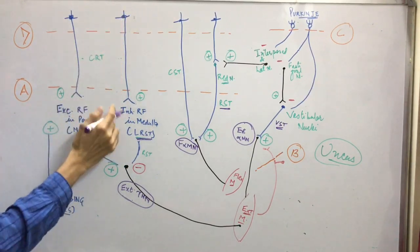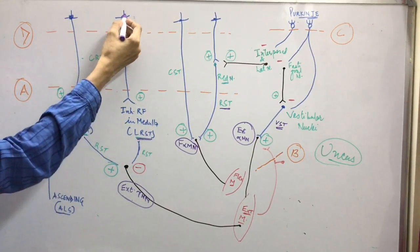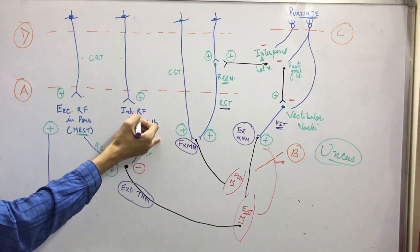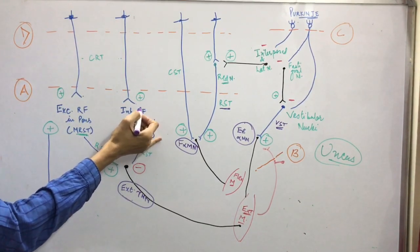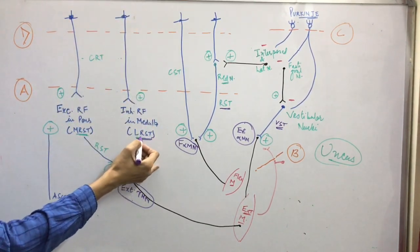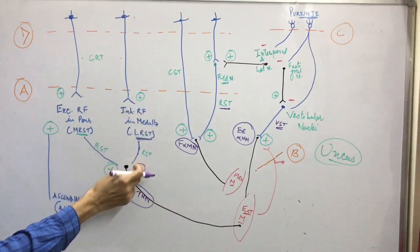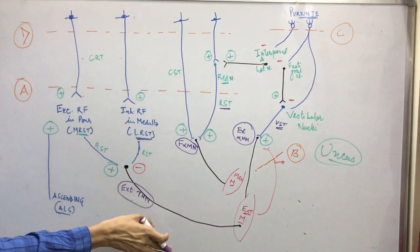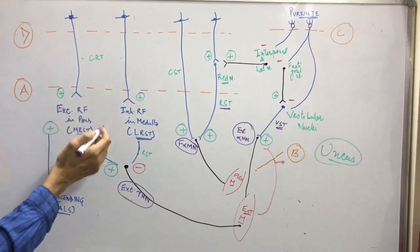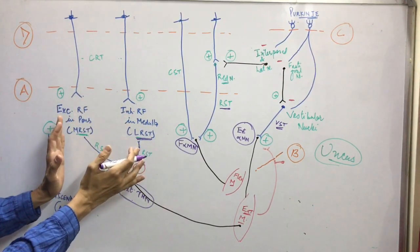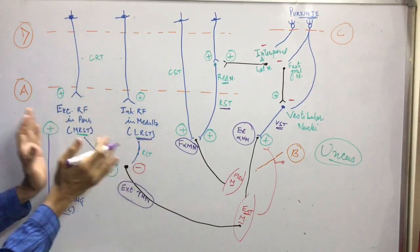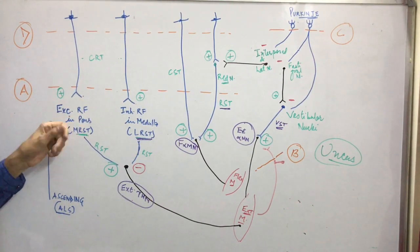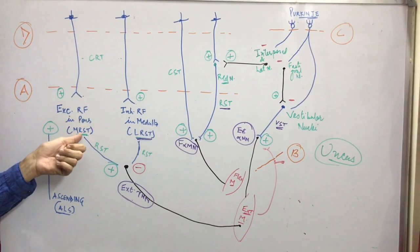The lateral reticulospinal tract has control from the cerebral cortex. Neurons from the cerebral cortex come and stimulate them, and only after stimulation from the cerebral cortex will they get excited. Because they are inhibitory, they will inhibit the next neuron. That is regarding the reticular formation: the excitatory reticular formation in the pons is the medial reticulospinal tract.